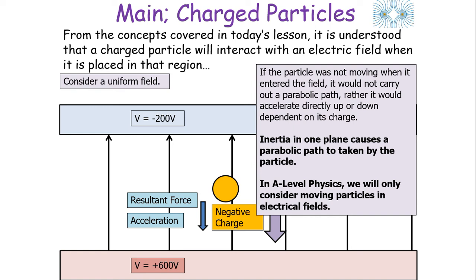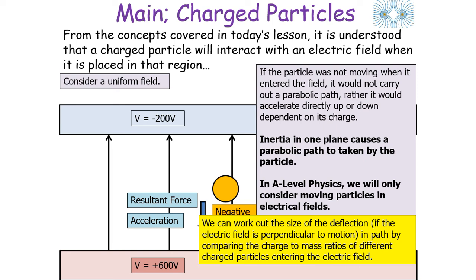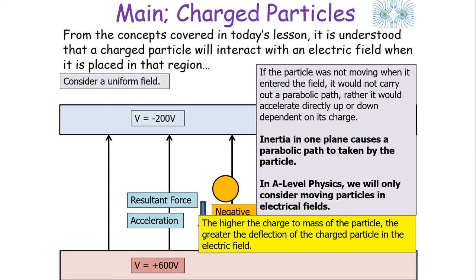In A-level physics, we only ever consider moving particles in electrical fields. We can work out the size of the deflection when the electrical field is perpendicular to motion by comparing the charge-to-mass ratios of different charged particles entering the field. The higher the charge-to-mass ratio of the particle, the greater the deflection in the electrical field.